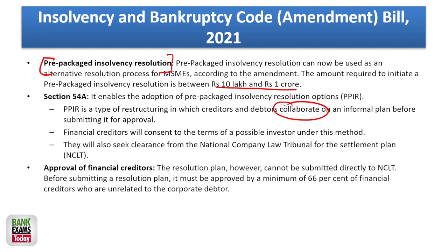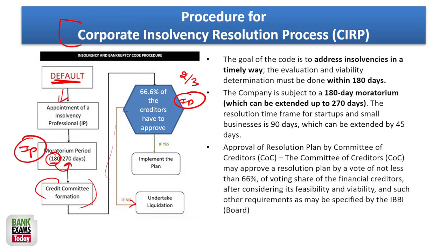Financial creditors will consent to the terms of a possible investor under this method. If it is possible for an external investor to come into the picture and invest money, that would also be possible. They will also seek clearance from NCLT for the settlement plan. The resolution plan cannot be submitted directly to NCLT — it must be approved by a minimum 66% of financial creditors who are unrelated to the corporate debtor.